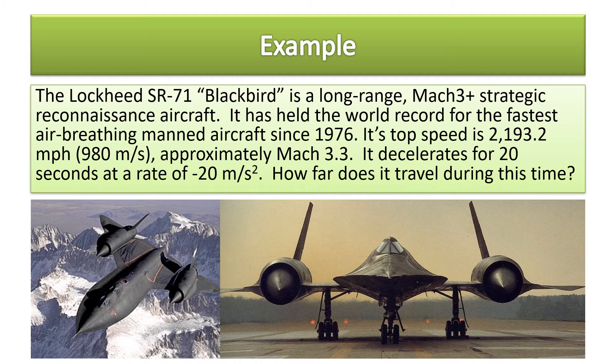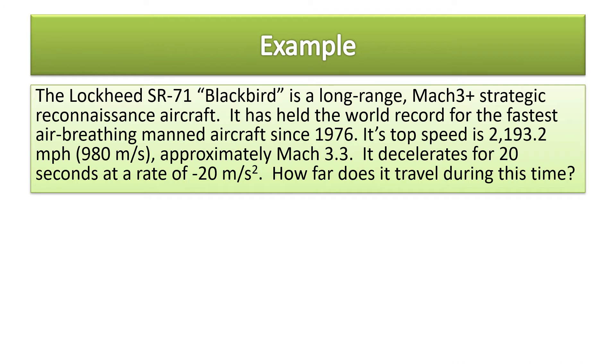That must be nuts. So let's do the problem. It decelerates for 20 seconds at a rate of negative 20 meters per second squared. Because you have a positive velocity and a negative acceleration, you know you're slowing down. How far does it travel during this time? We'll write our initial velocity as that positive. Let's use the meters per second version because they told us the acceleration in meters per second, so we want to make sure our units agree. The time is 20 seconds. What are they looking for? How far does it travel? That's the displacement.